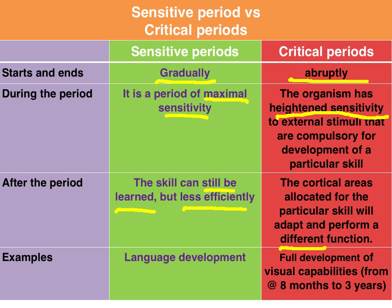An example of a sensitive period is language development — we can still learn language after the sensitive period has closed, i.e., during adolescence. An example of a critical period is the full development of visual capabilities; if we are not exposed to the appropriate stimuli during those critical periods, we will have some visual deficiencies.